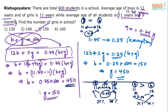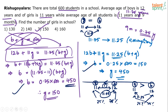Even if you go by the conventional method, you will get the answer quickly. But the idea is: the moment you see 11, 12, and 11.75, you should know the number of boys will be more because the average is towards the boys' side — so take 75% as boys. If it is towards the girls' side, take that percentage for girls.